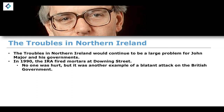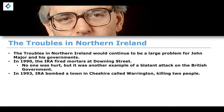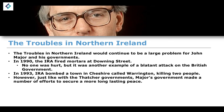The fact that they were able to fire mortars at Downing Street itself is quite remarkable, especially given the kind of security apparatus that exists post 9/11. In 1993, we also see the IRA bomb a town in Cheshire called Warrington, and this kills two people.